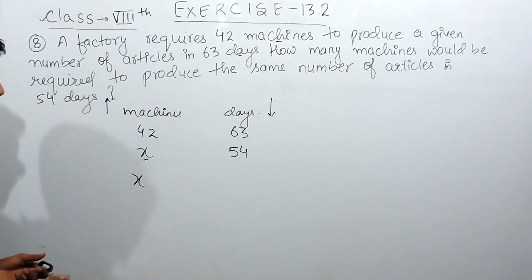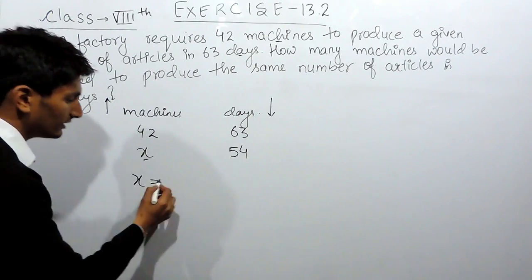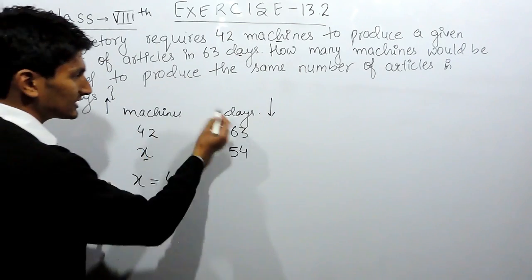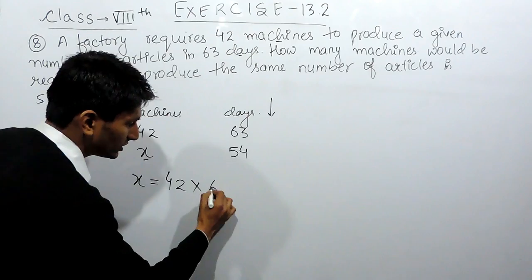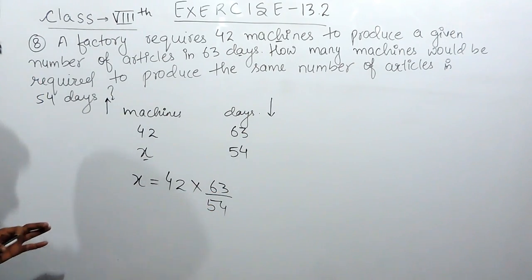This is the value you have to find out. So we can write this as x equals to, the value above this variable can be written here. And now, because this is inverse proportion, you have to multiply. So I can multiply, this is 63 and this is 54.